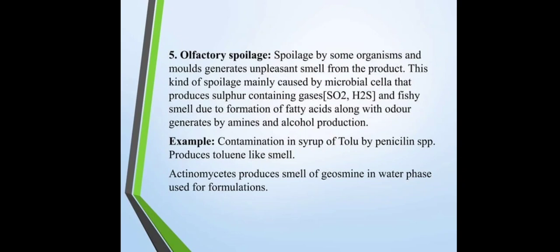Olfactory spoilage: some organisms and molds generate an unpleasant smell from the product. This kind of spoilage is mainly caused by microbial cells that produce sulfur-containing gases and a foul smell due to formation of fatty acids, along with odor generated by amines and alcohol production. For example, contamination in syrup or tolu by Penicillium produces a toluene-like smell. Actinomyces produces earthy smell in the water phase used for formulation.